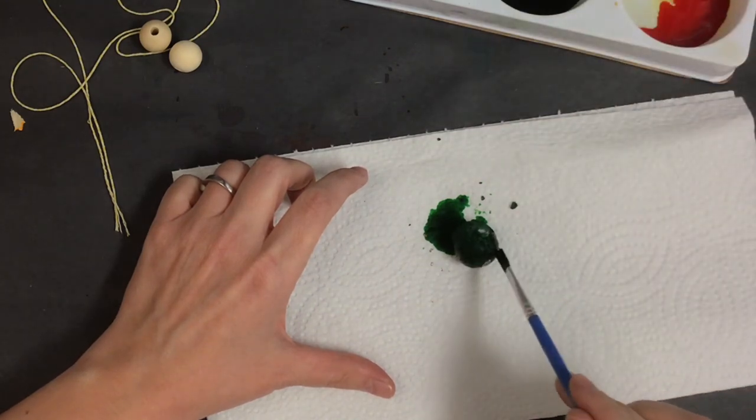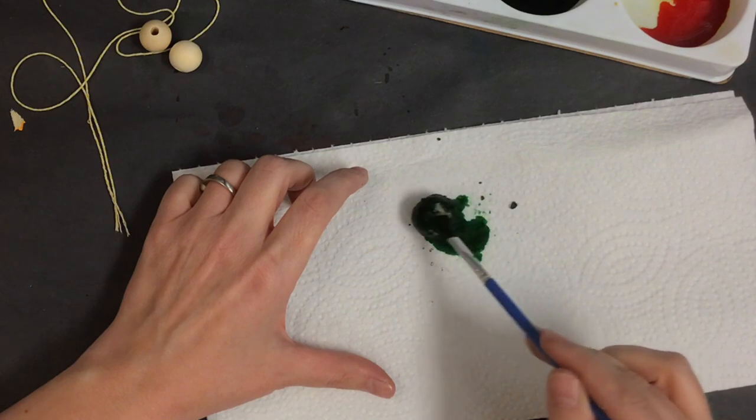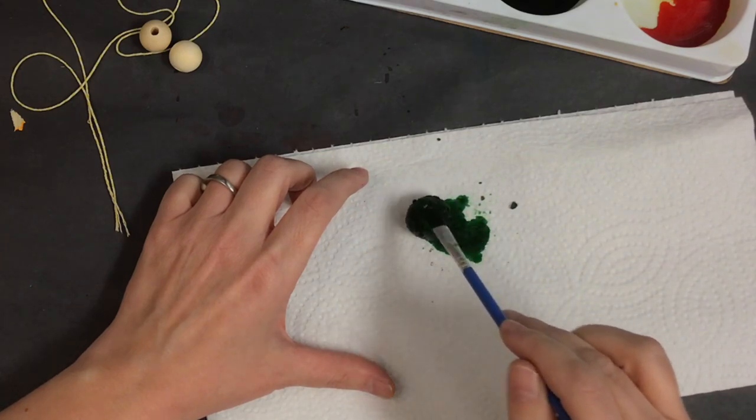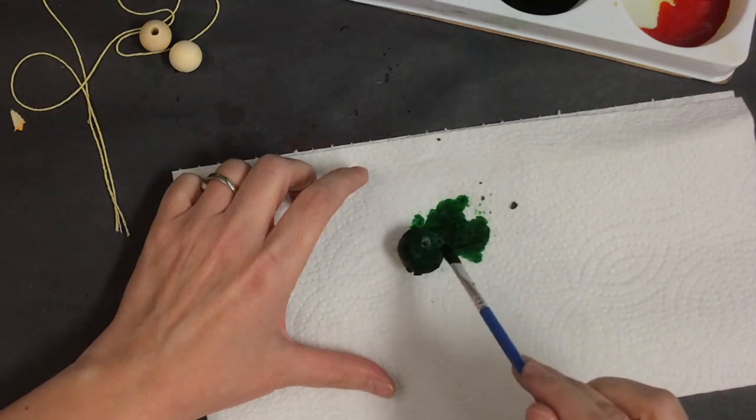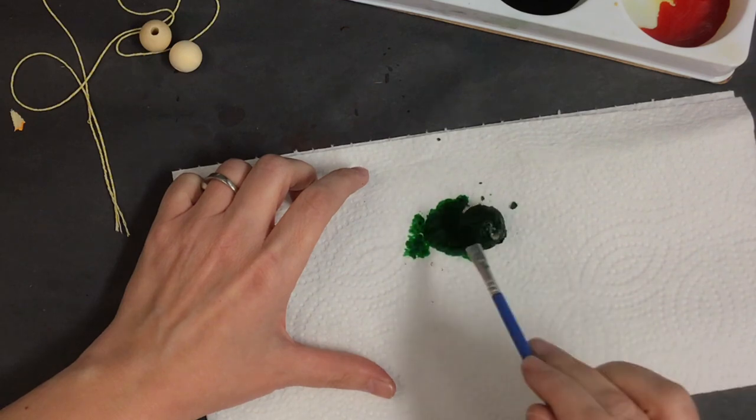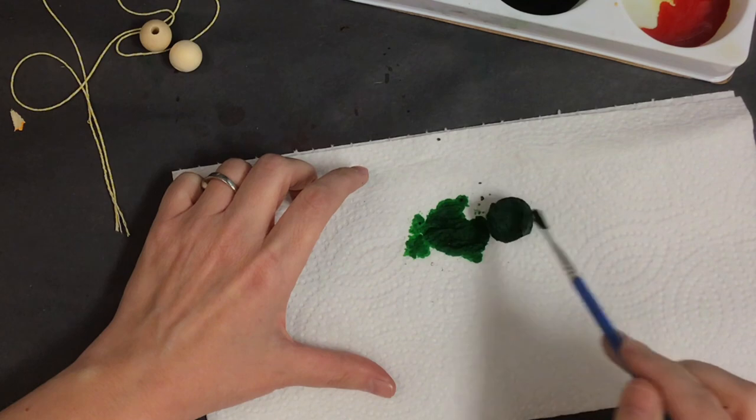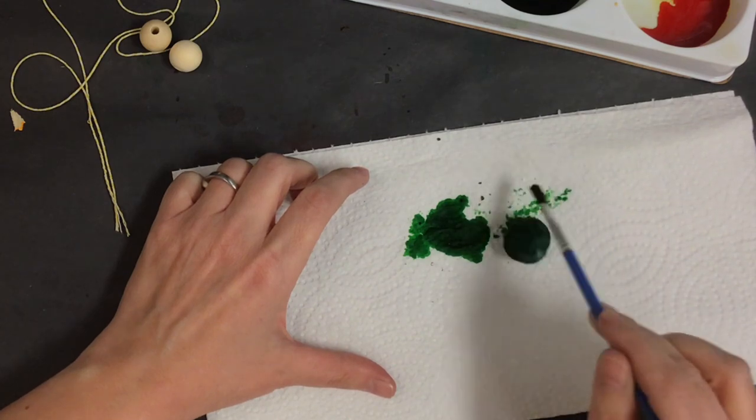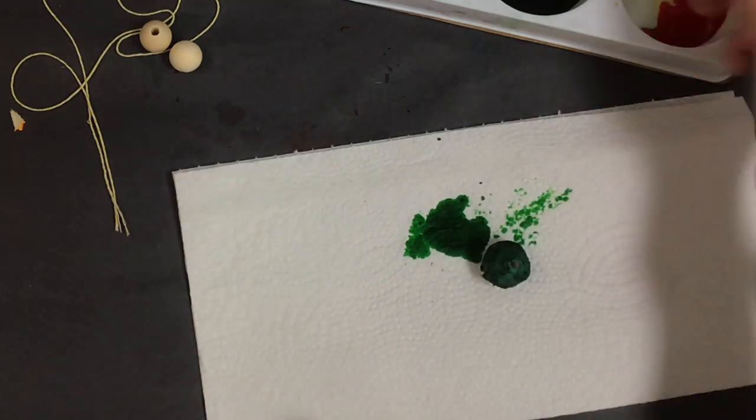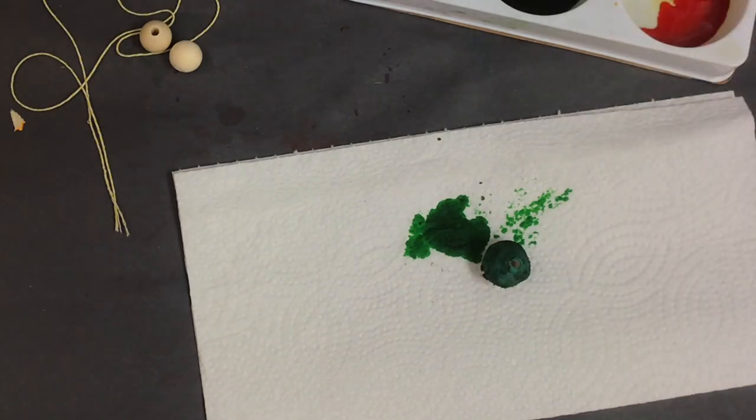I'm just gently tapping the bead with the paintbrush. You want to make sure that you cover the whole thing. Try not to touch it because it will stain your hands. I did this on top of a paper towel to try to keep my desk a little bit cleaner. You'll want to do this for all of your beads. I ended up using two colors, green and blue. Of course, color choices are up to you.